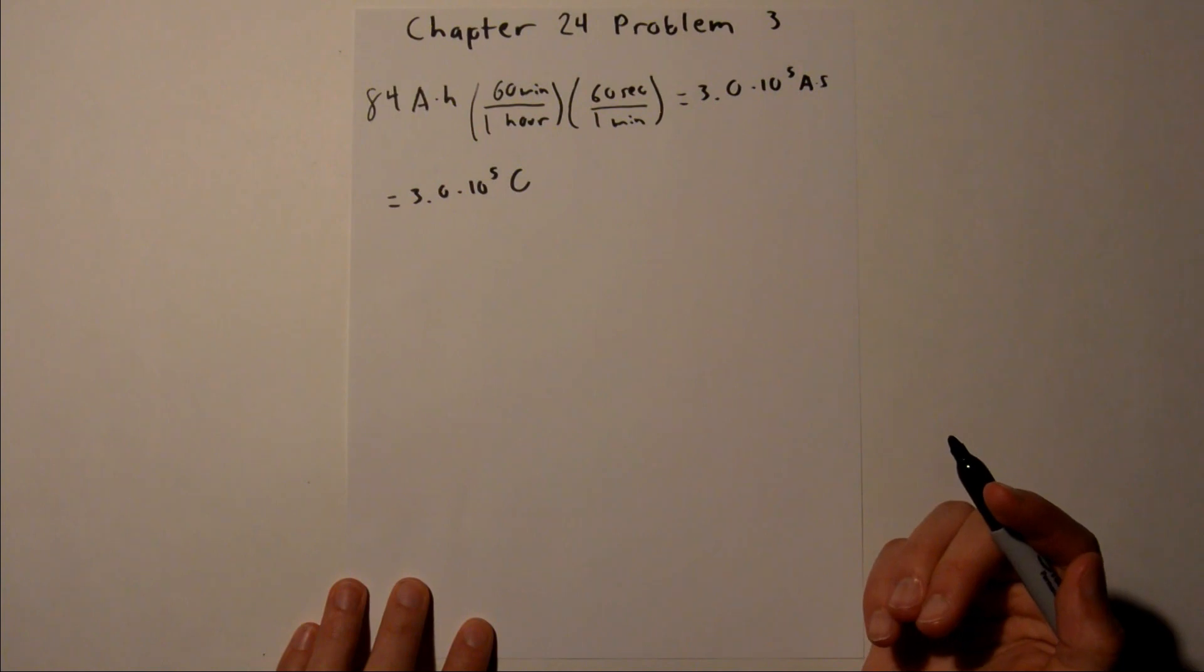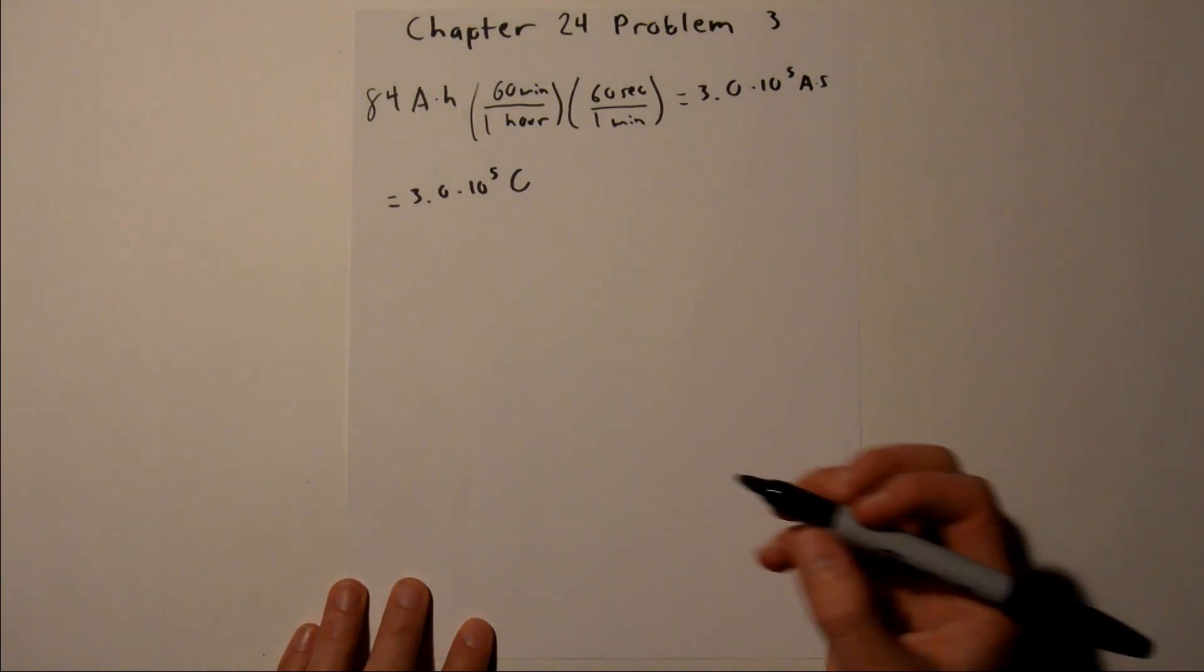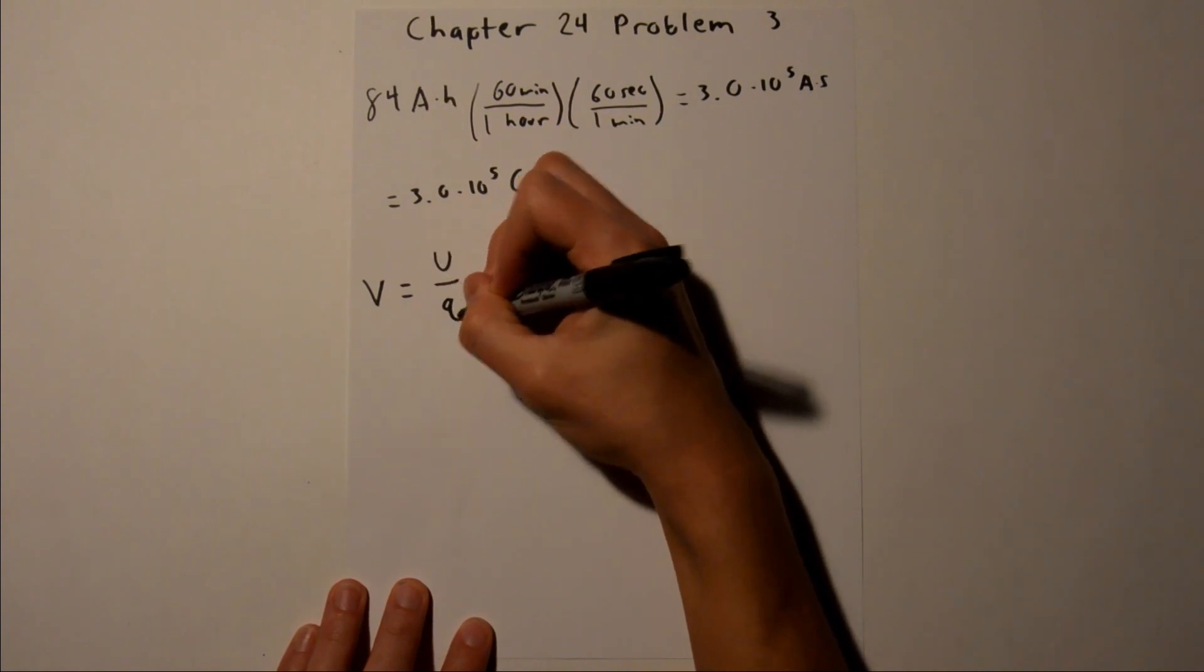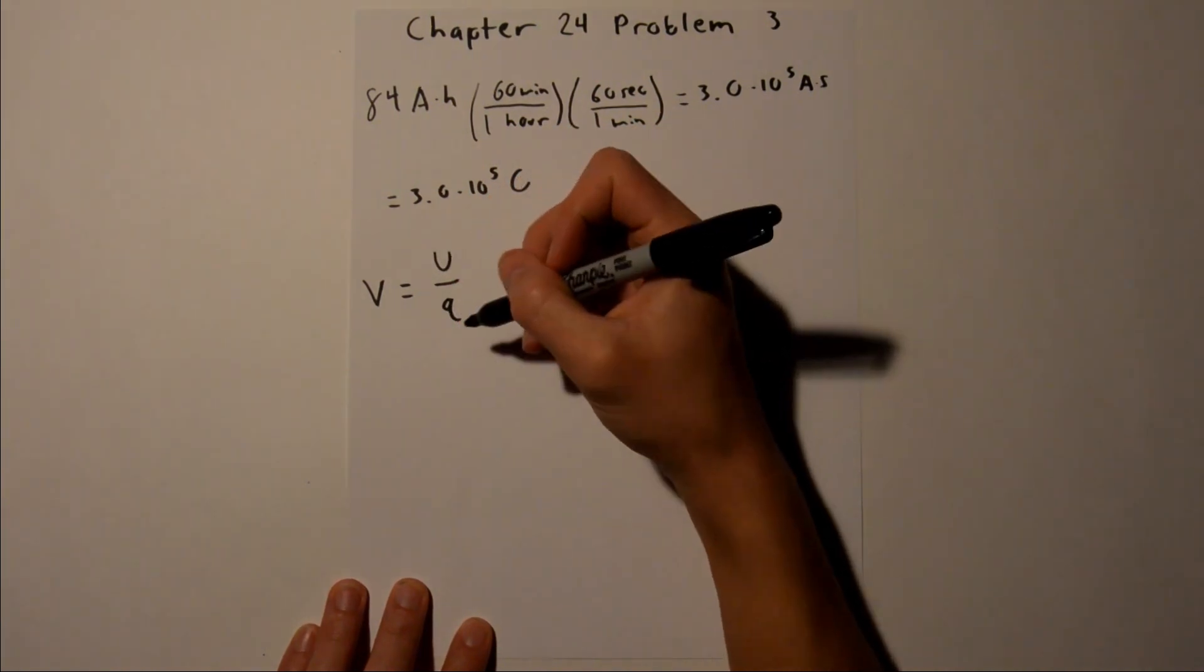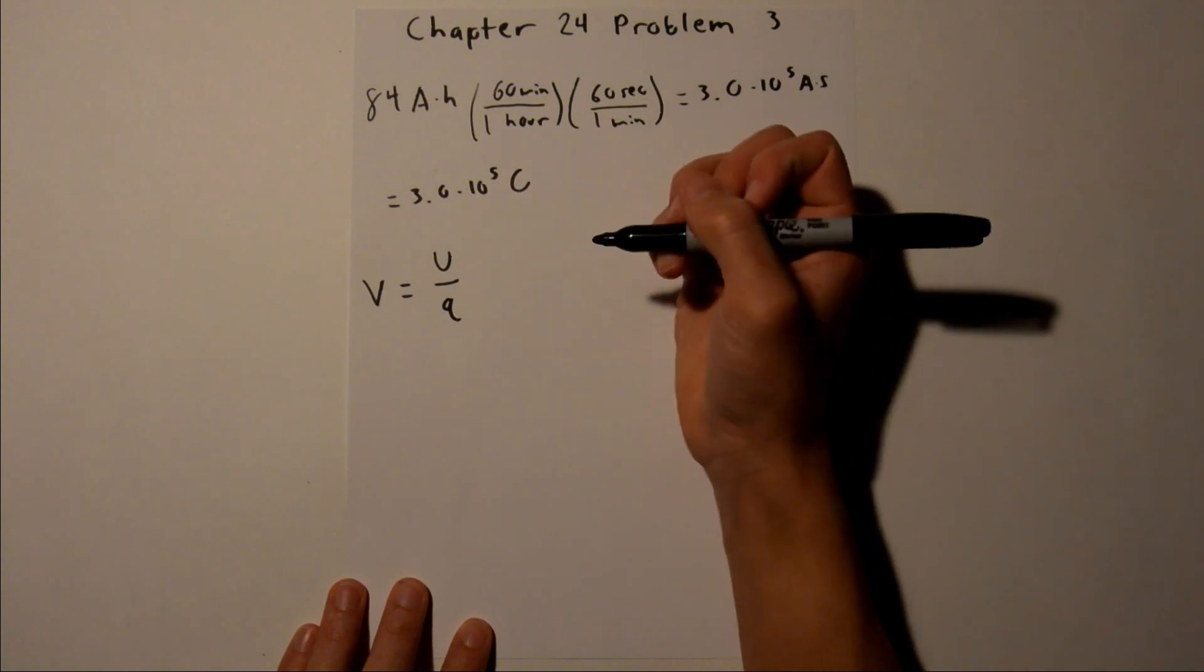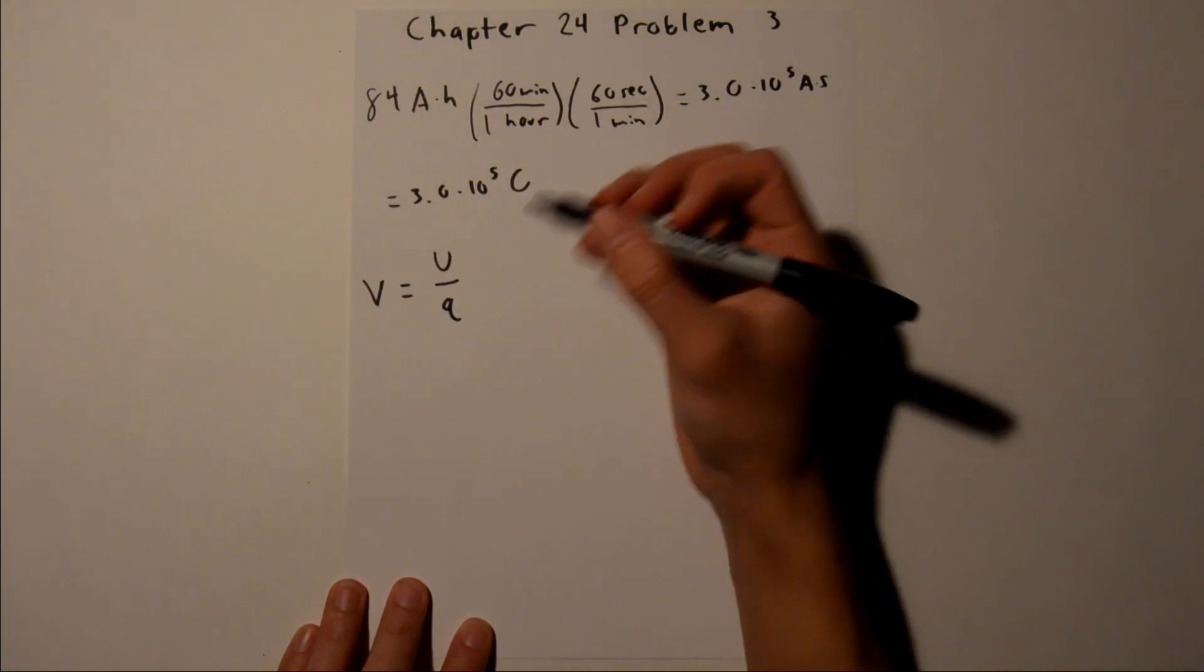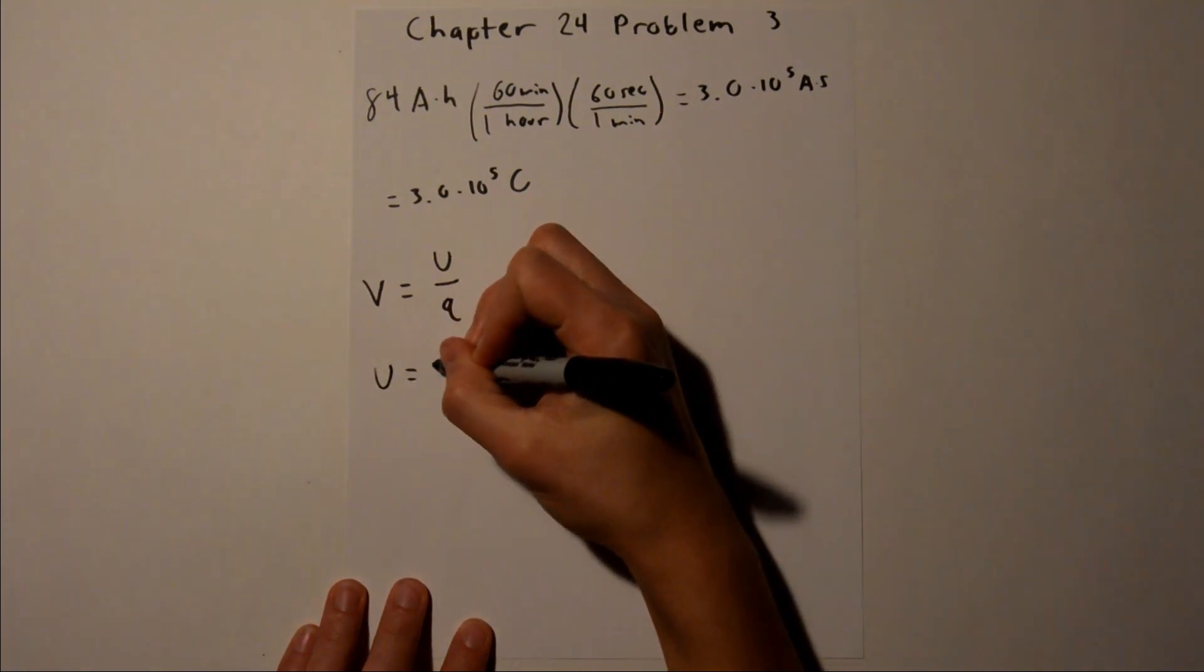And now we need to find the energy, so we can use the equation V, or potential, is equal to U over Q, where U is the electric potential energy, and Q is charge. And since we're solving for energy, we can multiply both sides of this equation by Q. So we will get U equals QV.